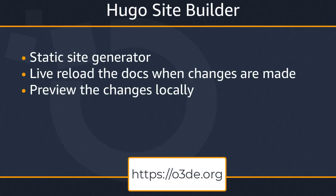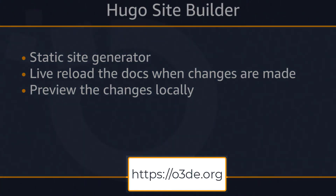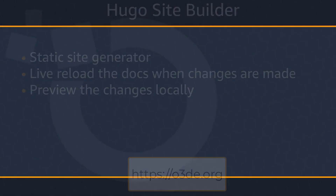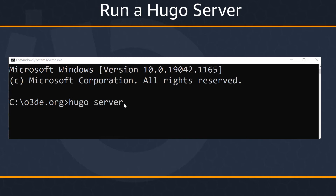The O3DE.org documentation uses the Hugo Netlify static site generator to transform the markdown you author into served webpages. When you have Netlify installed locally, you can run a local server that will let you preview your work on your own machine before you submit a pull request, helping ensure that your work won't be initially rejected because it doesn't render well when served. Please visit the O3DE documentation page for more information on how to install the Hugo site builder.